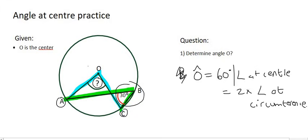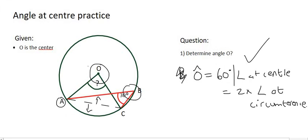So if we connect A and C and have a look, everything to this side of the dotted line is one segment and everything to this side is another segment. Now angle O and angle B are on the same segment, so they're on the same side of the dotted line. And so we can use this theorem.